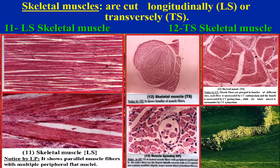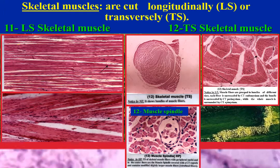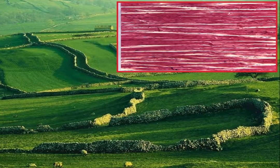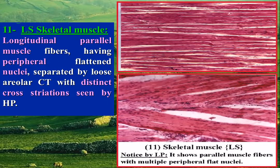Muscular receptors: TS of skeletal muscle by high power showing muscle spindle. TS of skeletal muscle high power showing Pacinian corpuscle. TS of skeletal muscle showing longitudinal parallel muscle fibers having peripheral flattened nuclei, separated by loose areolar connective tissue. Distinct cross-striations of the muscle fibers can only be seen by high power.